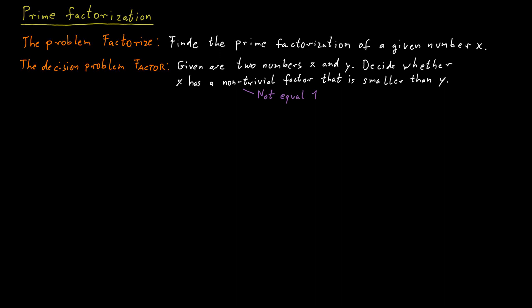This decision problem factor is closely related to factorize, the problem of finding the prime factorization of an input number x. Specifically, we have self-reducibility here. So factorize reduces to factor in polynomial time in the Cook sense. Meaning if we have an oracle for the decision problem factor, we can also solve factorize in polynomial time.